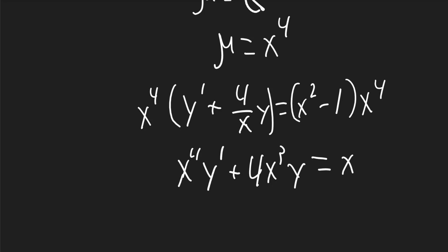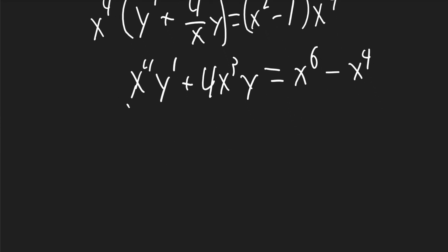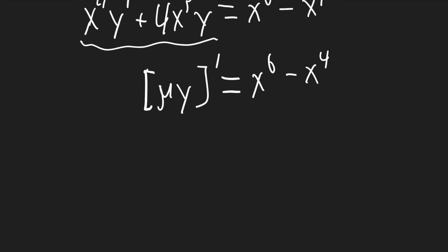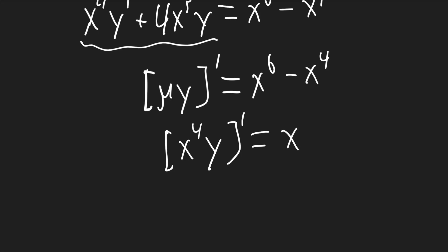On the right, that equals x to the 6th minus x to the 4th. The left-hand side is simply the derivative that occurs when you multiply mu times y and then take its derivative. So we write the derivative of x to the 4th times y equals x to the 6th minus x to the 4th.